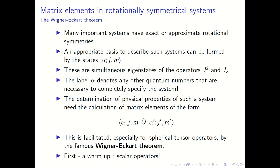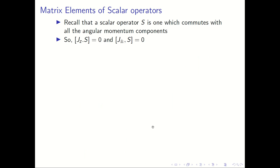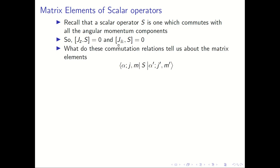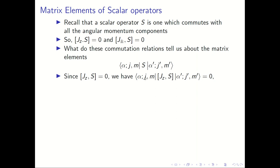Scalar operators are single operators which do not transform or change when you carry out a rotation of coordinates, which implies that they commute with all the angular momentum components. So we have the commutator of j_z with S and the commutator of j_± with S are both zero. What do these commutation relations tell us about matrix elements of this kind, where the scalar operator is sandwiched between two different states?